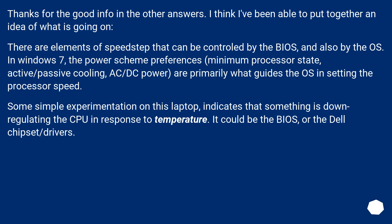Thanks for the good info in the other answers. I think I've been able to put together an idea of what is going on. There are elements of Speedstep that can be controlled by the BIOS and also by the OS. In Windows 7, the power scheme preferences — minimum processor state, active/passive cooling, AC/DC power — are primarily what guides the OS in setting the processor speed. Some simple experimentation on this laptop indicates that something is down-regulating the CPU in response to temperature, which could be the BIOS or the Dell chipset/drivers.